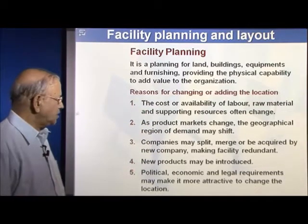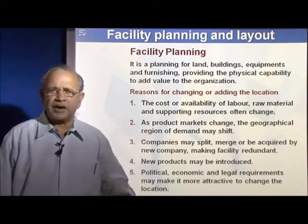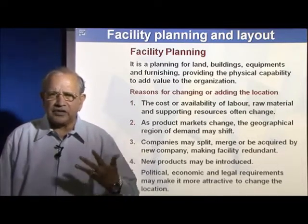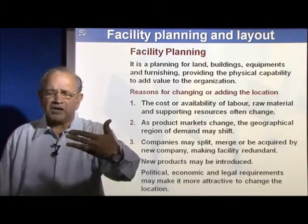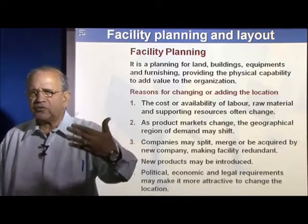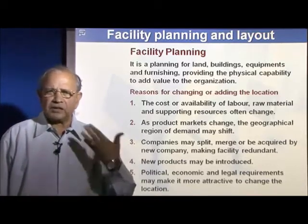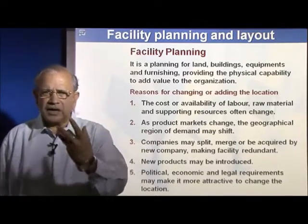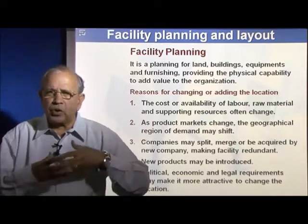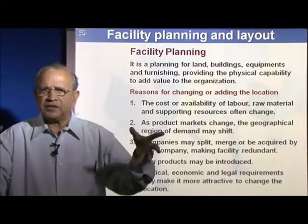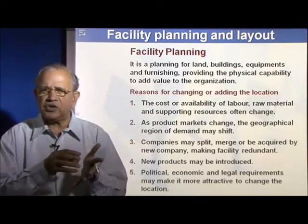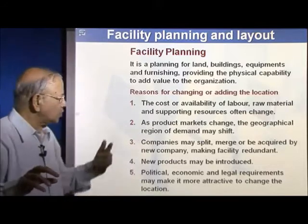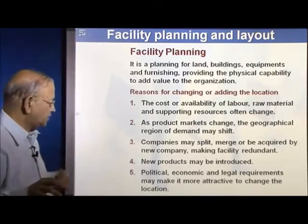Product market also may change — demand may suddenly shift. You might have found that a particular type of product was not selling in one industry, but now you find tire industry also using it. In that situation, the point of sale is very close, so you shift your factories closer to it. For example, Madura Coats used to produce yarn at a central place with dyeing plants spread all over India, near where the sale takes place, while garment factories set up only a dyeing unit. So there was a change needed to relocate to accommodate this.